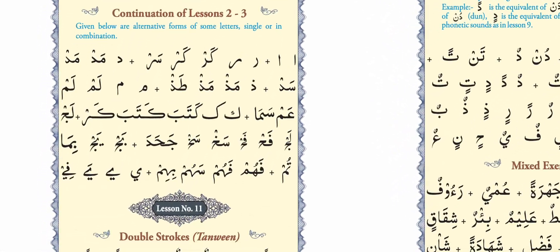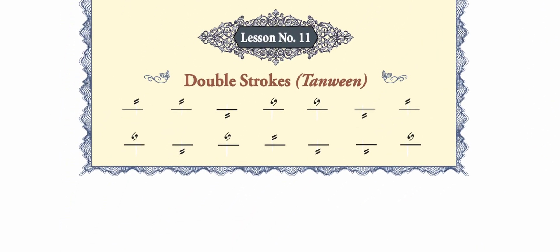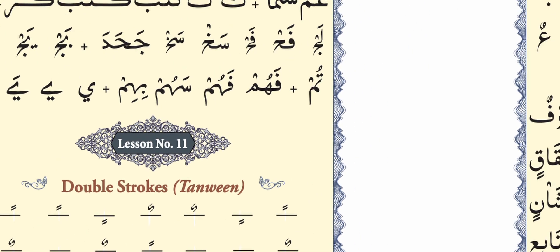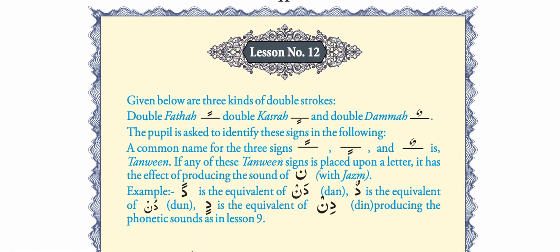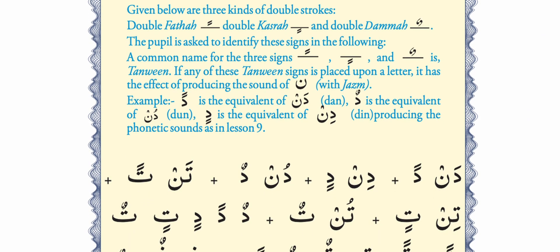In Yassar al-Quran, lesson number 11 is made for children to recognize tanween, and after lesson 11, in lesson number 12, the examples are given. If you look carefully, you will notice they have spelled out how the sound of the letters will be when they have double signs. You will notice that the only thing added in the sound is noon jasm.